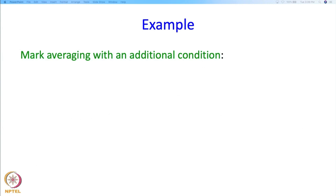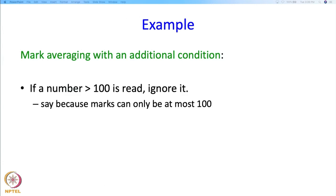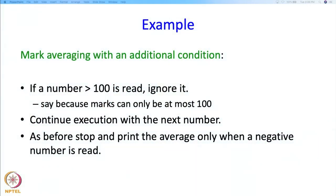So we look at the same mark averaging problem but now we have an additional condition. So suppose somebody types a number bigger than 100, then we are going to say that look, that must have been a mistake. So if it is a mistake what should we do? We should just ignore it, or in other words we should just not execute the statements that come after this reading statement. And therefore the continue statement will come in handy. And as before we want to stop and print the average only when a negative number is read.